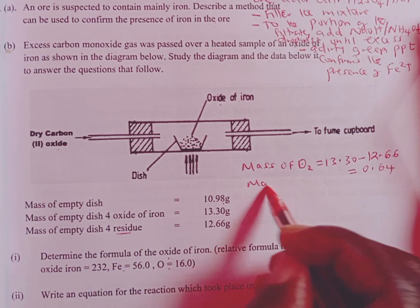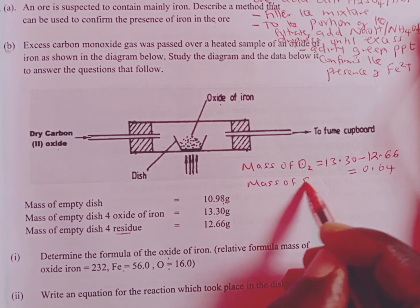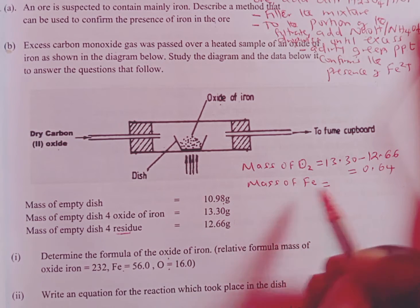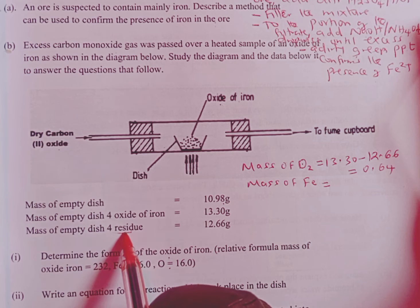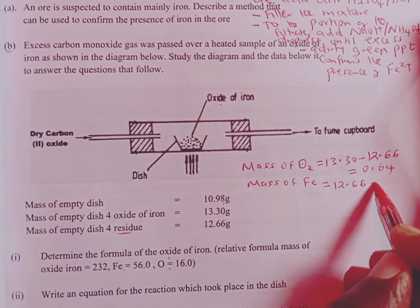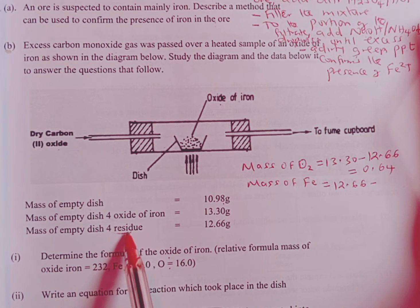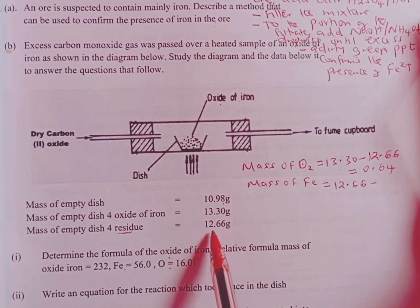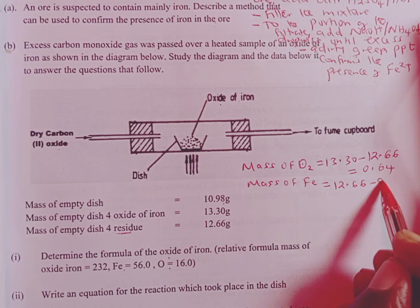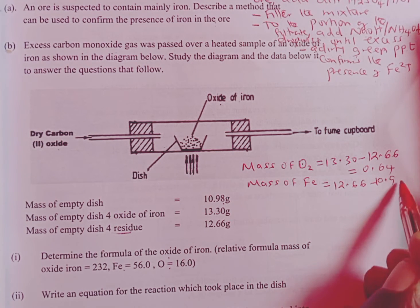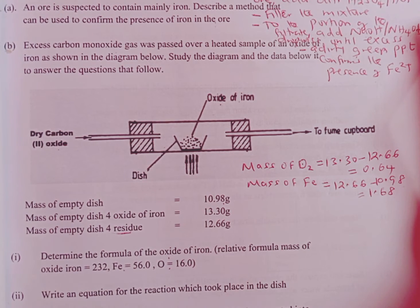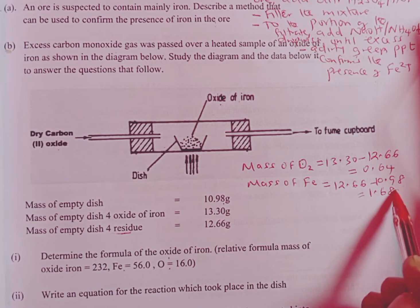Then we get the mass of iron. To get the mass of iron, we are simply going to take the mass of the residue, which is now the iron, giving us 12.66 minus that of the empty dish. Remember the residue, which is iron plus empty dish, is weighing 12.66 grams. If we remove the dish which is weighing 10.98, this one is going to give us 1.68 as the mass of iron in grams.